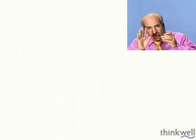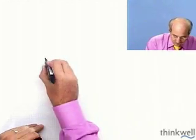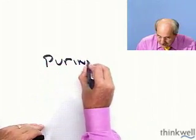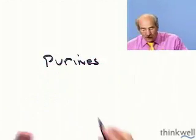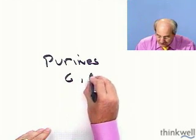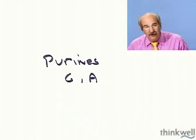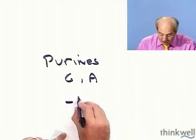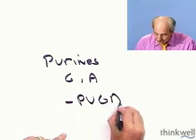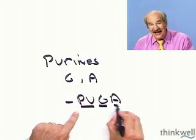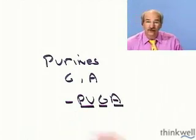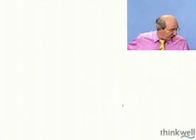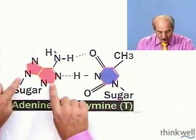Remember that there are four different nucleotides, two of which we call purines. The purines are guanine and adenine. There's a way to remember this — I like to tell my students to remember it as 'PUGA 2': the purines are guanine and adenine, and they have a two-ring structure. Here you can see adenine with its two-ring structure.